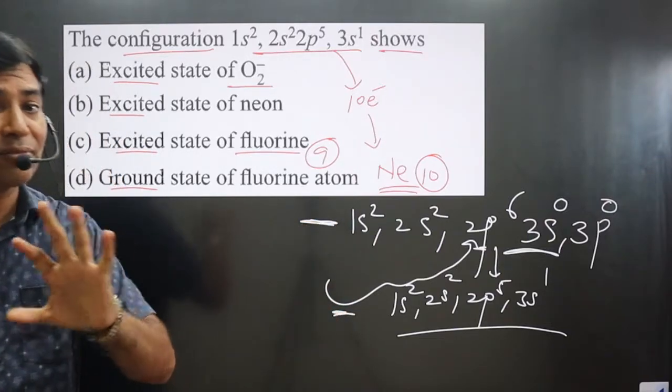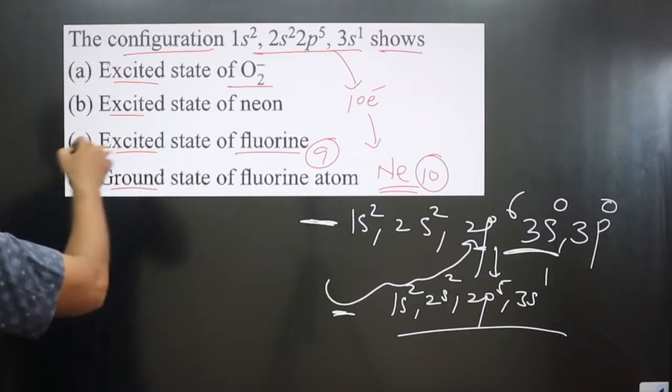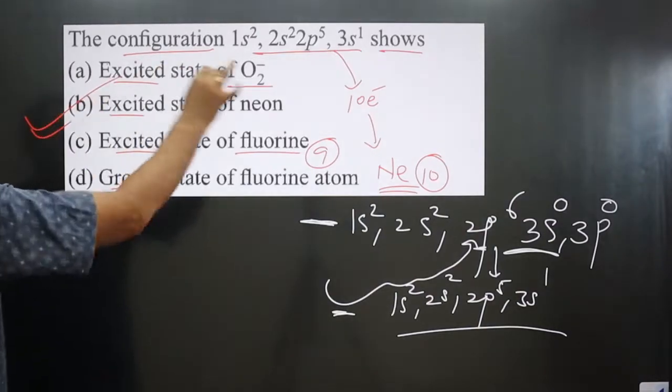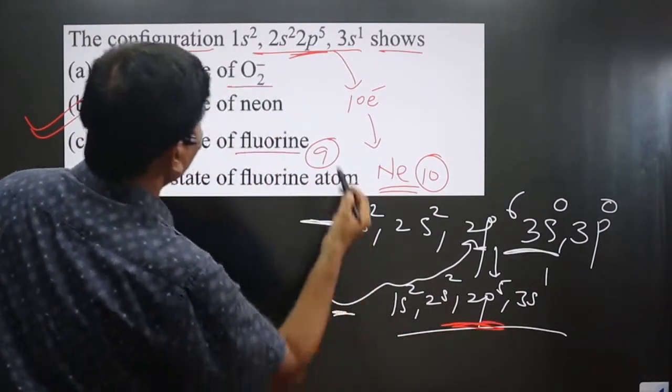We got the second option: excited state of neon. You can see 2p⁵ is there - we have 2p⁵ and then we have 3s¹.